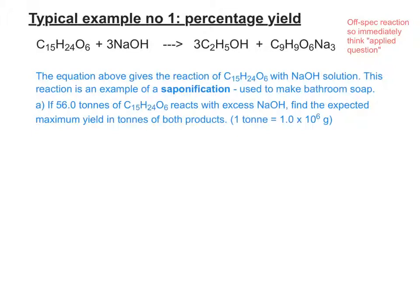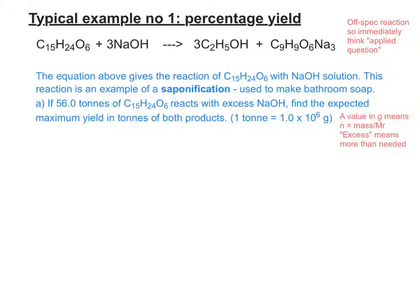So let's have a look at what they want us to do. The first thing is they say 56 tons of C15H24O6 reacts with excess NaOH — find the expected maximum yield in tons of both products. In brackets it tells you that one ton equals 1.0 × 10⁶ grams, which means you're going to have to do moles = mass ÷ Mr. Excess NaOH means you have more NaOH than is needed, so you will not have to work out its moles. Both products have to be worked out.